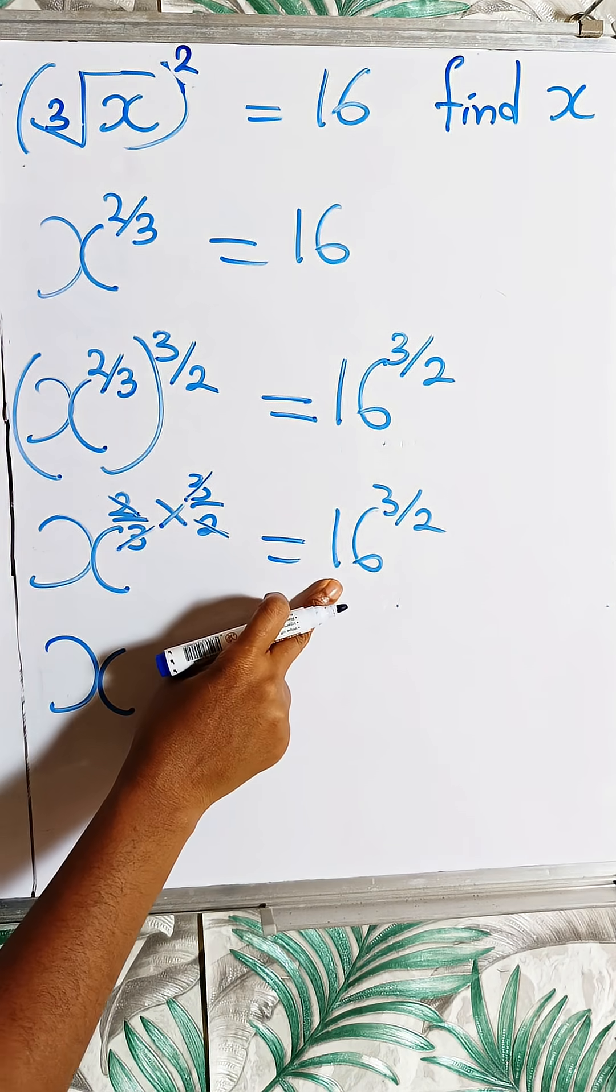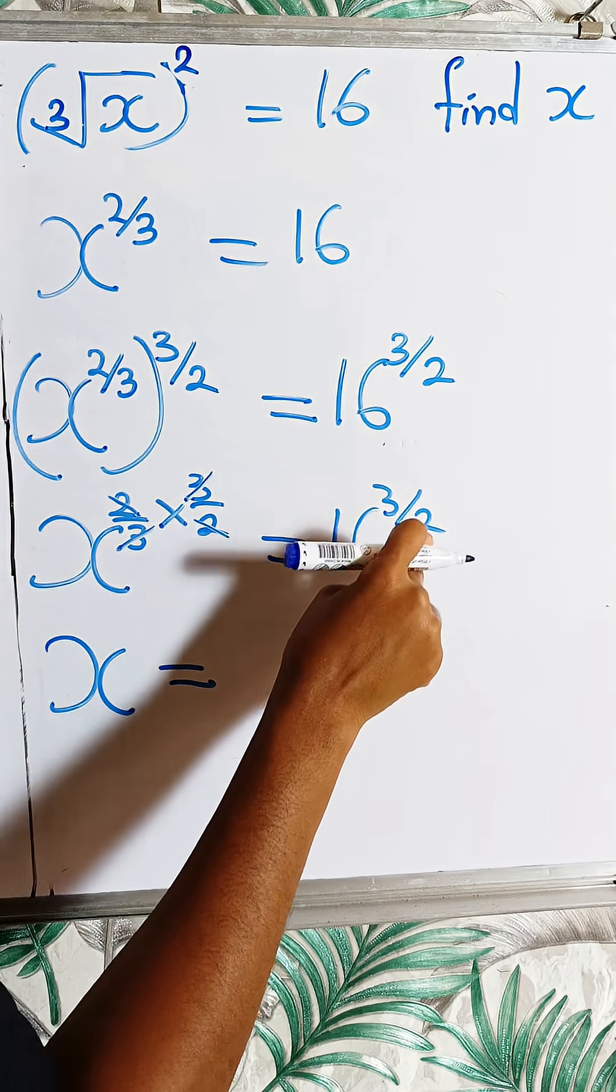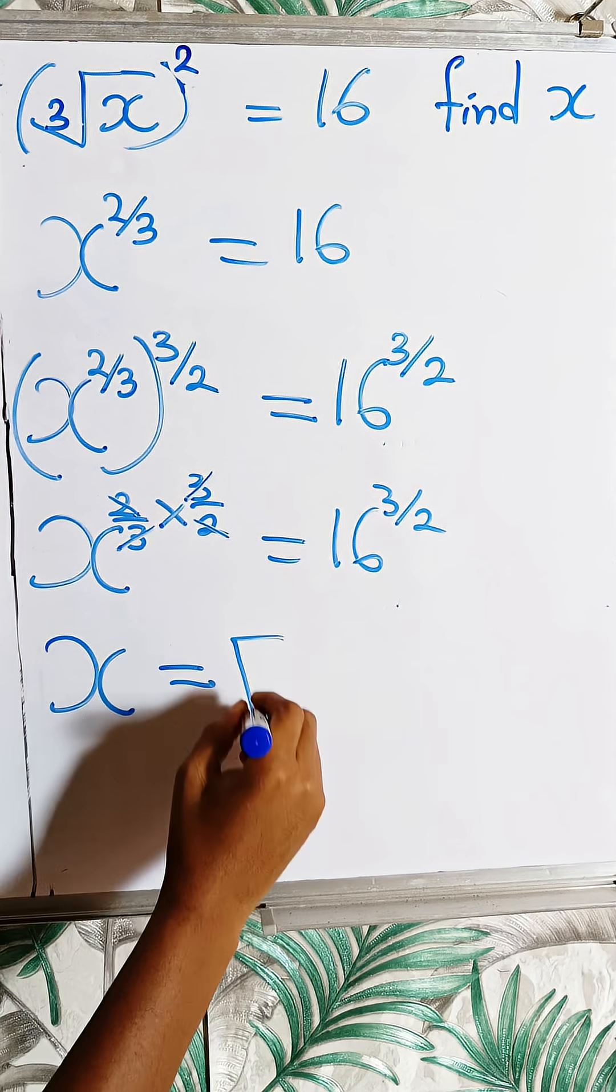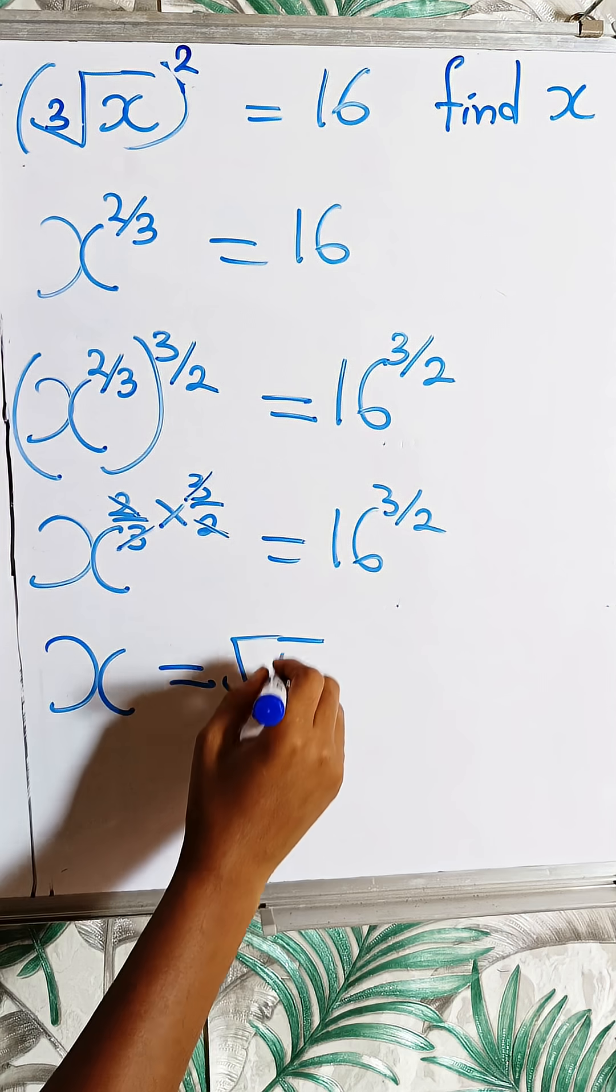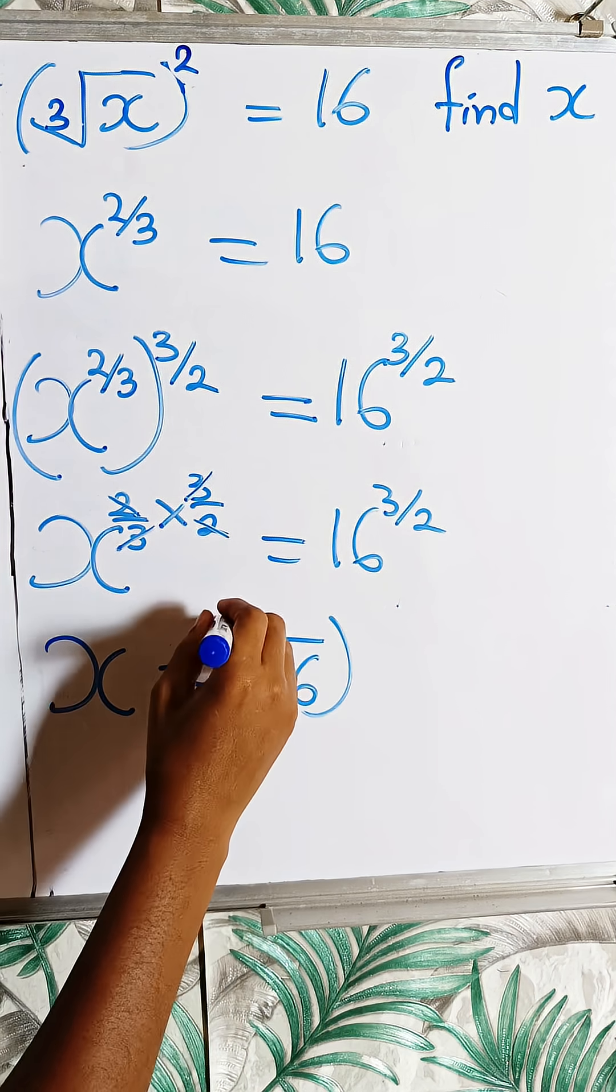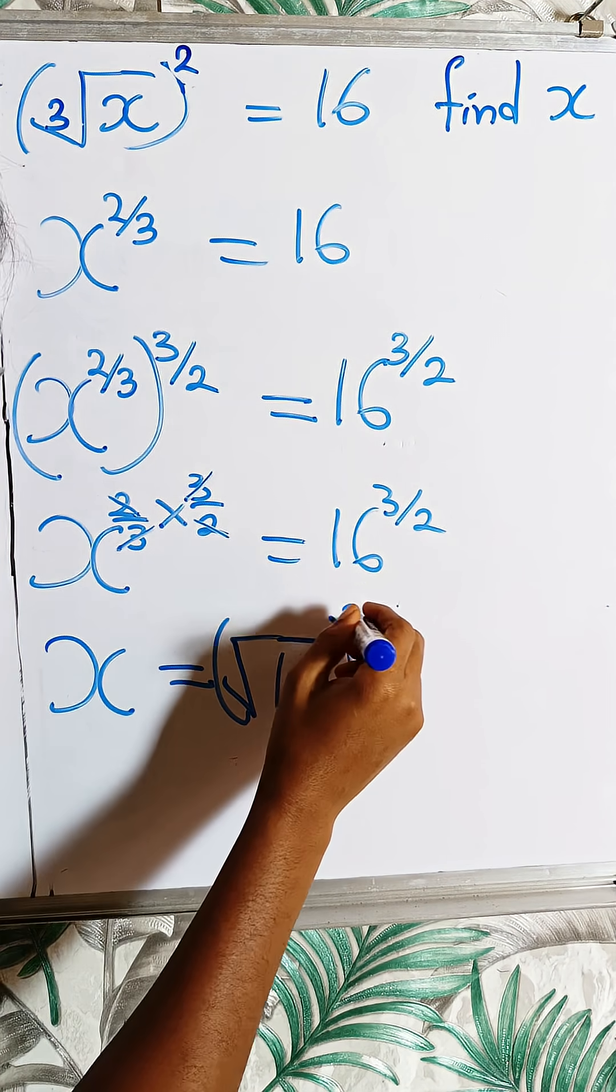Remember that when you have something like this, 16 raised to power 3 over 2, the denominator will take the root. So here I have root 16, while the numerator will take the power.